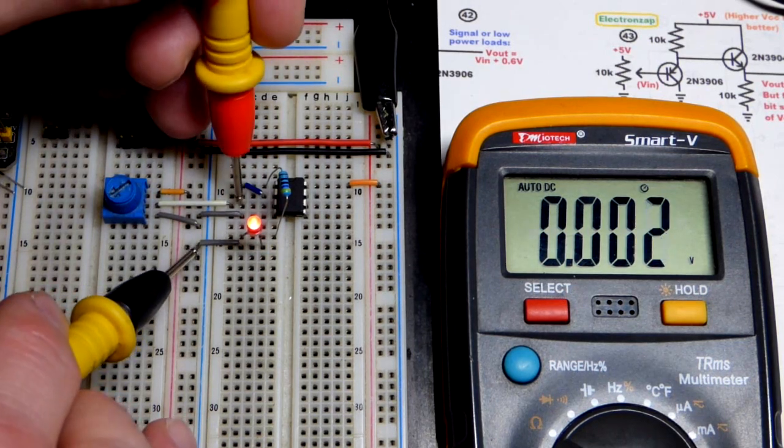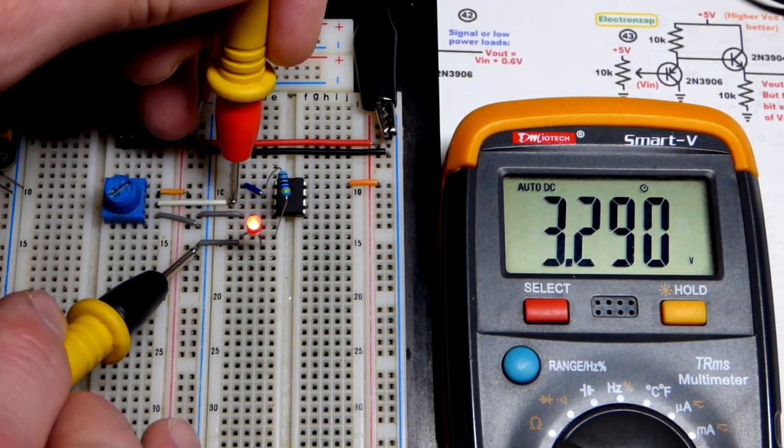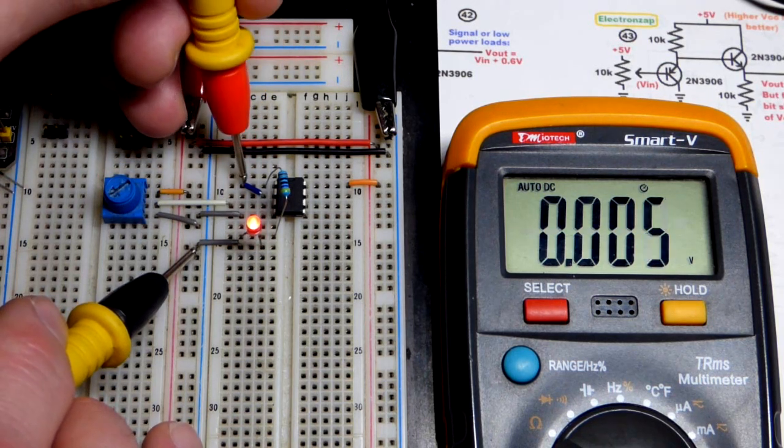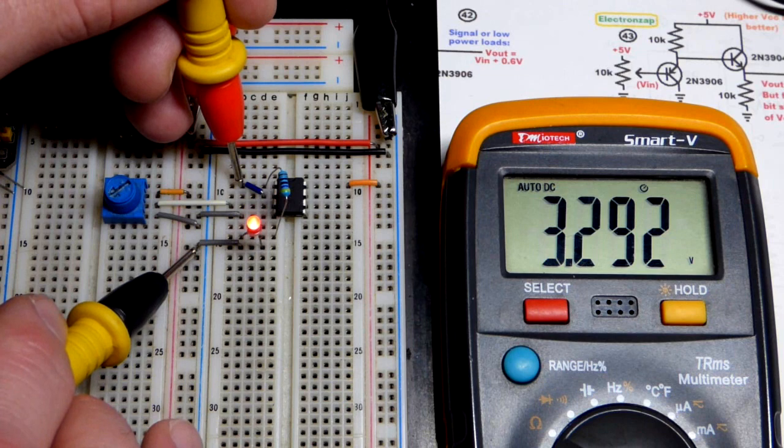But for now, we're going to look at the signal voltage we're given from the trim pot. And there we go. 3.29. And at the output, 3.29.